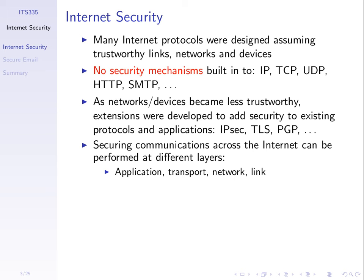The original internet protocols didn't support security, so people have created add-ons that can be used at different layers in the protocol stack. We can add encryption inside the application, inside the operating system, or inside the transport layer using an extension called TLS, also called SSL. Don't get confused — it was originally called SSL but as versions changed it became TLS, though in this context they mean the same thing.